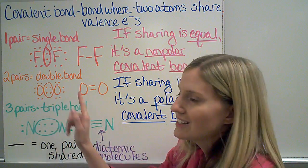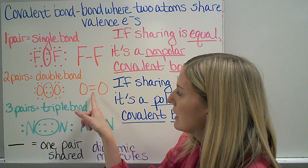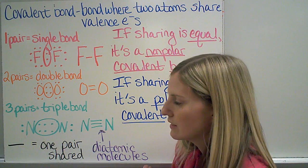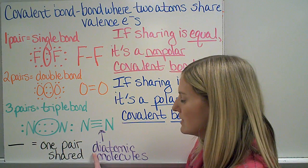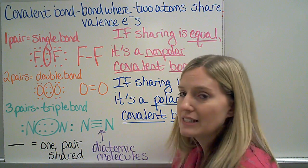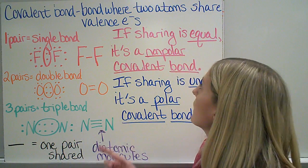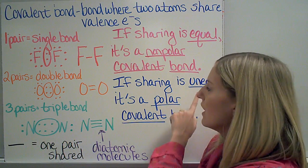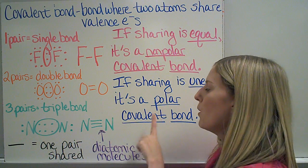If I'm sharing two pairs of electrons, that's a double bond. Oxygen does that when oxygen bonds to oxygen — I see two pairs, or four total, and I draw that with two dashes. Three pairs is a triple bond, with six valence electrons being shared, shown with three dashes. All three of these molecules are called diatomic molecules — di means two, so I have two of the same element bonded together. If the sharing between atoms is equal, we call that a nonpolar covalent bond. If the sharing is unequal — one atom is hogging the electrons — that's called a polar covalent bond.